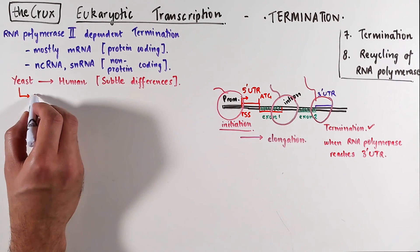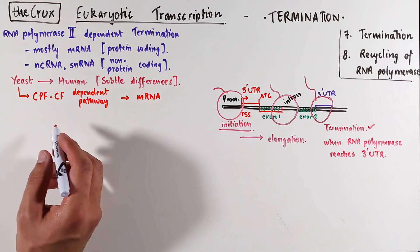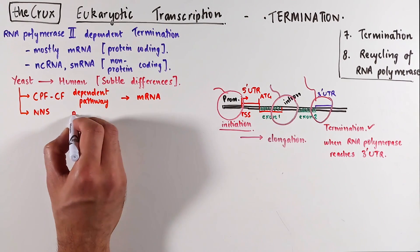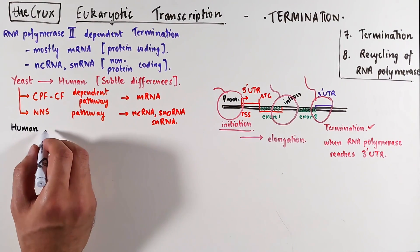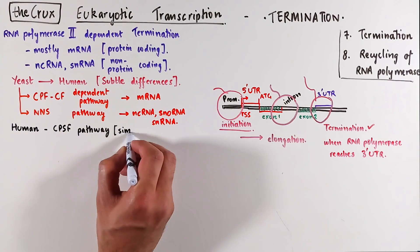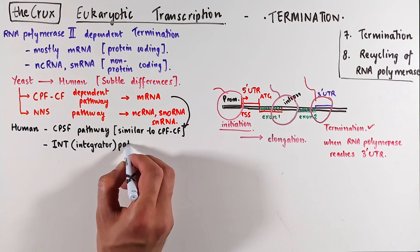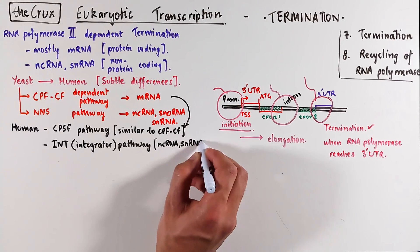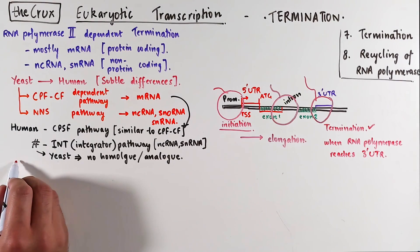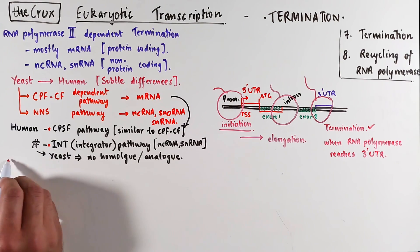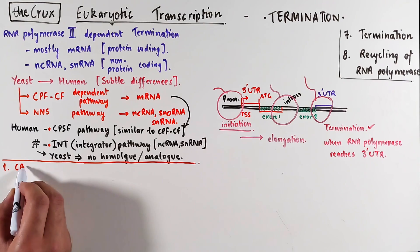In yeast, there are two predominant pathways for RNA polymerase II transcription termination. The first is the CPF-CF pathway, which terminates mRNA. The second is the NNS-dependent pathway, which is responsible for the termination of non-coding RNA, small nuclear RNAs, or small nucleolar RNAs. In humans, we have the CPSF pathway, similar to the CPF-CF pathway in yeast, and a different pathway known as the integrator-dependent pathway, which terminates non-coding RNAs and small nuclear RNAs. This integrator-complex dependent pathway is not present in yeast. In this video, we will specifically discuss only the human RNA polymerase II dependent transcription termination — the CPSF and the integrator-dependent termination pathways.